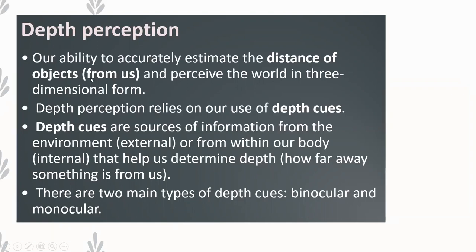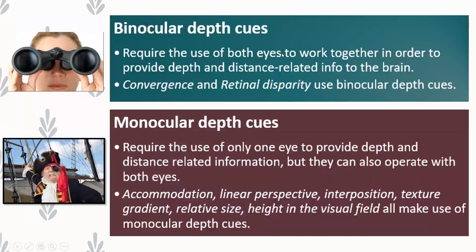Depth is another word for distance, so depth perception is essentially distance perception. There are two main types of depth cues: binocular and monocular. Binocular depth cues require the use of both eyes — like binoculars — and help us understand depth and distance. Convergence and retinal disparity are two examples of binocular depth cues. Monocular depth cues require only one eye — mono meaning one, ocular meaning eye. Accommodation and linear perspective are examples of monocular depth cues.